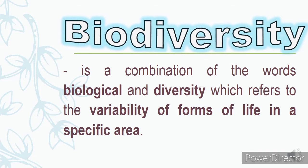We don't only have one species of banana. We have tundan, binangay, we also have cavendish. We also have cats, but different kinds of cats, and dogs with different kinds or species of dog. In short, biodiversity came from the shortened combination of the words biological and diversity, and it refers to the variability of forms of life in a specific area.